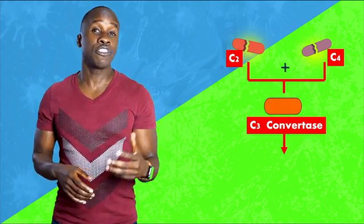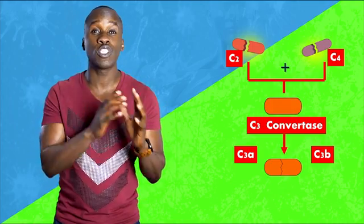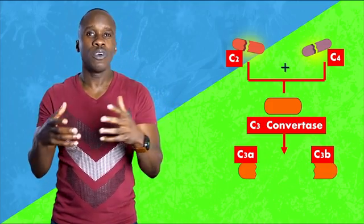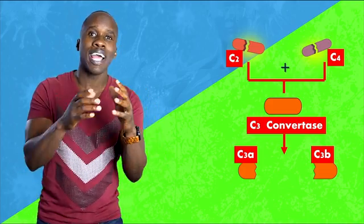Now, when that happens, C3 convertase will split in two and form C3A, which is smaller, and C3B, which is a larger fragment. So now we have these two fragments.